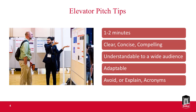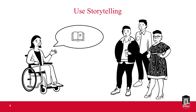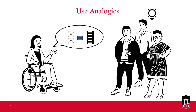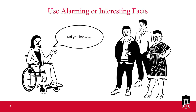A few tips and techniques to keep in mind when engaging in conversation with people about your project: use storytelling when relevant, consider using analogies to explain complex research topics, and use alarming or interesting facts as attention grabbers. For example, if your project is on the psychological impact of having a parent with cancer, you can capture people's attention by starting with, 'Did you know over 5 million children in the U.S. are coping with the psychological impacts of having a parent with cancer?'